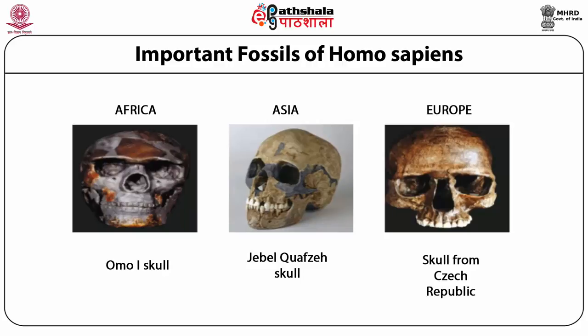In Europe, the earliest Homo sapiens fossils are found from sites in Romania, Czech Republic, and France. Cranial remains of three individuals were recovered from Oase Cave in Romania. Despite being quite robust, the cranium has a clear chin and canine fossa, similar to modern specimens. Several crania recovered from a site in Czech Republic exhibit variation, with average features that are intermediary forms between Neanderthals and modern humans. Western Europe, particularly southern France, has been a treasure trove of hominin fossils, with paleoanthropological research spanning more than 150 years. These fossil remains are major evidence for theories on modern human evolution.